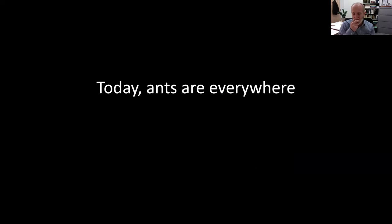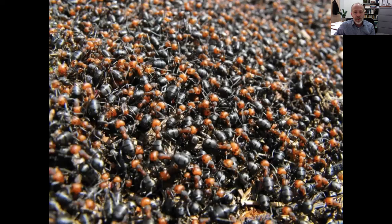I always like to start by thinking about this: today, ants are everywhere. It's hard to go anywhere, at least in the terrestrial world, and not come across ants. You can go all the way from the high Arctic to the tropics where there'll be lots and lots of ants. About a quarter of all animal biomass in the terrestrial world is comprised of ants, and in fact the other quarter is about termites. So social insects make up a huge bulk of the sheer biomass of life on earth today.